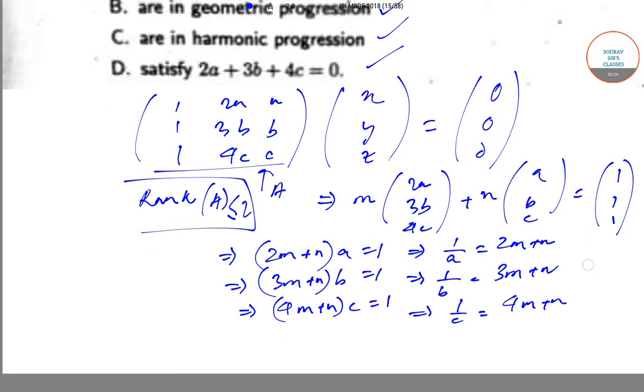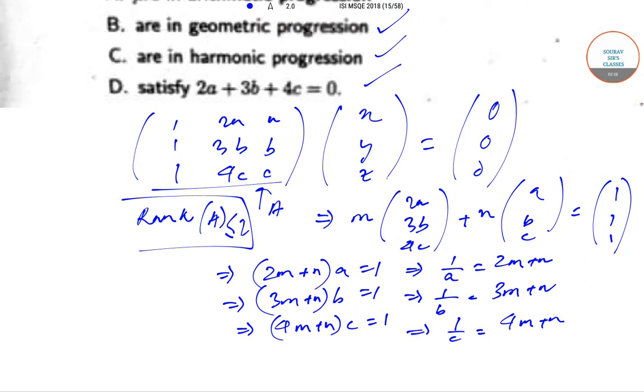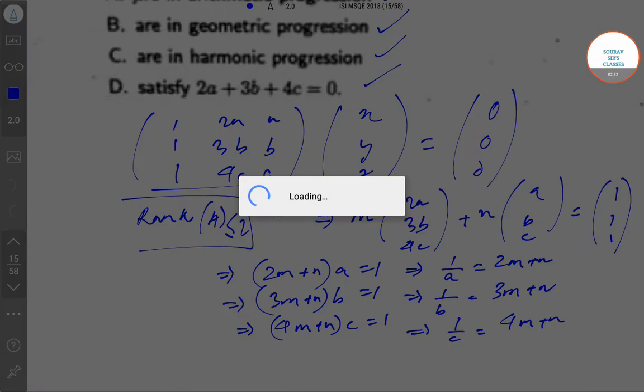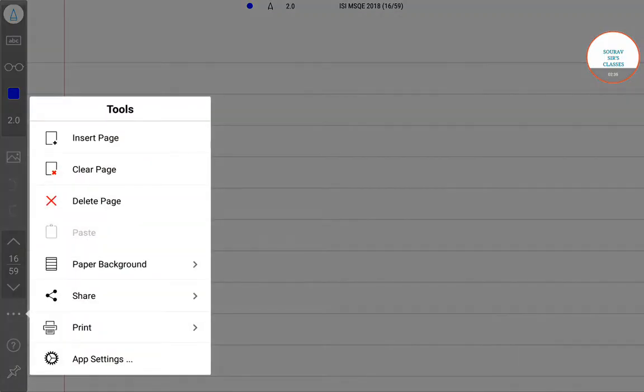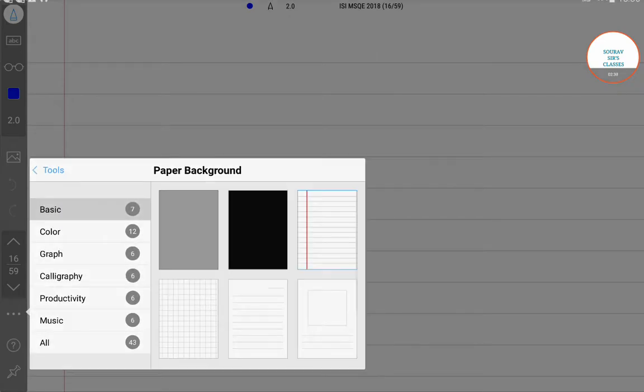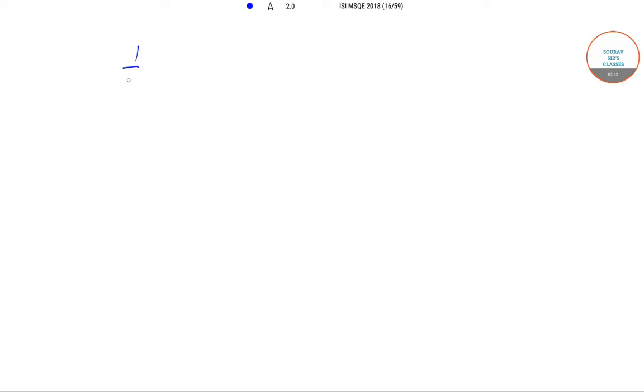Moving to the next page, that implies 1/b minus 1/a will equal (3M + N) minus (2M + N), which equals M.